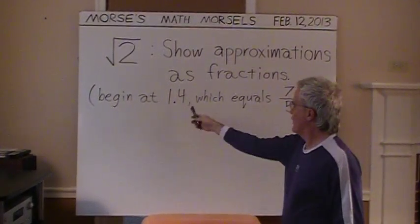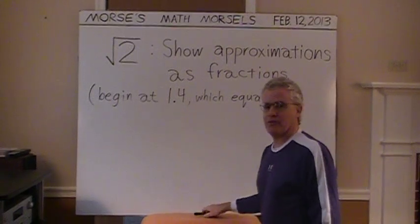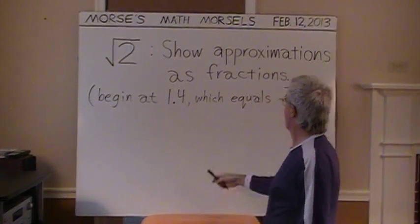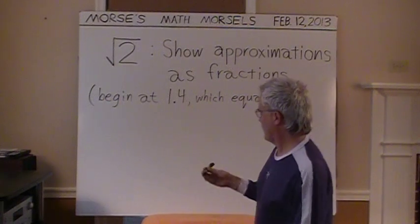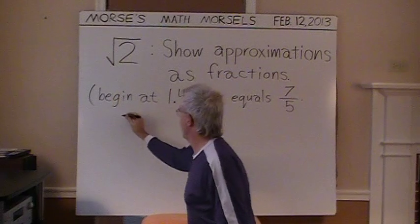I'm going to begin at 1.4, which is also 1 and 4 tenths, which equals 7 fifths in fractional form. So far, so good. We have our 7 fifths.